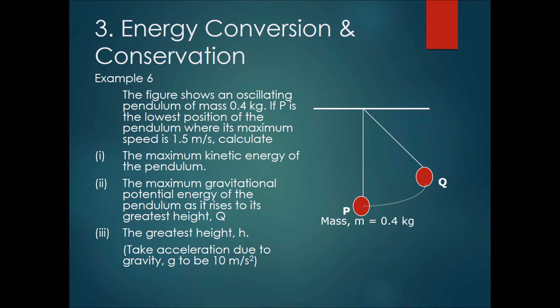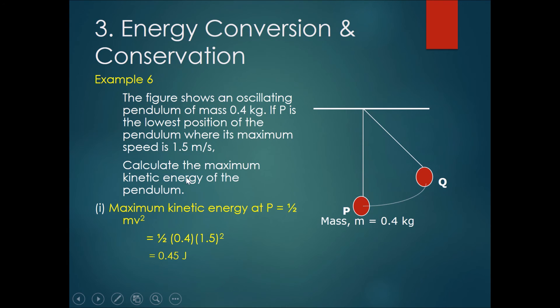Okay, now let's go to the answers. The first one is to calculate the maximum kinetic energy of the pendulum. Obviously, when the mass remains the same, the maximum KE would be where the maximum speed is. So we just sub the two values in. Maximum KE would be 0.5 mv squared, which is equal to 0.5 times mass times velocity squared, and that should get you a total KE of 0.45 joules.